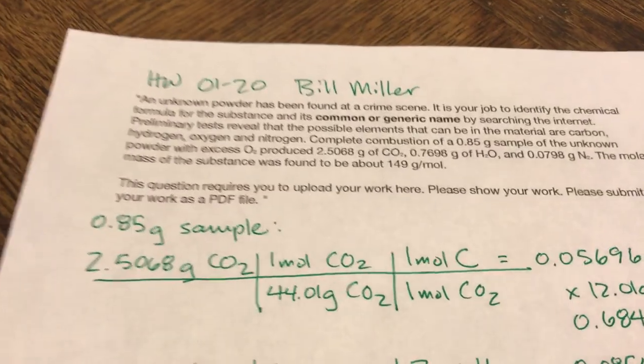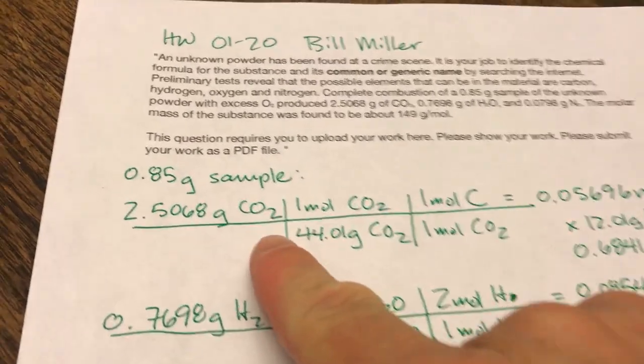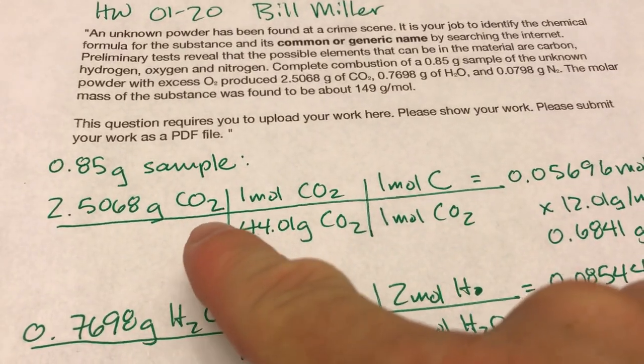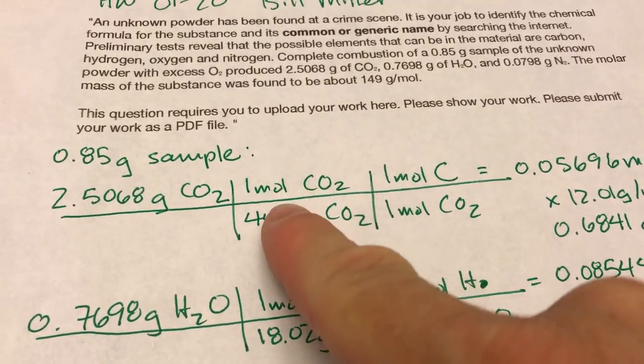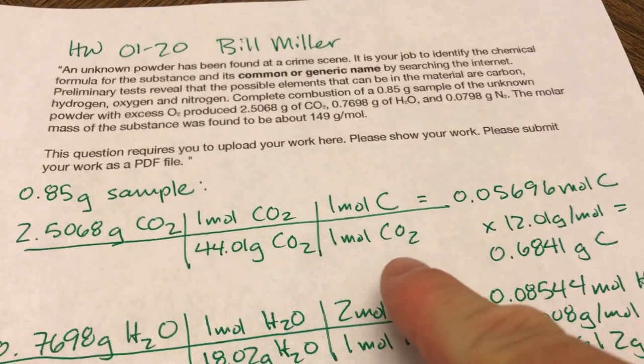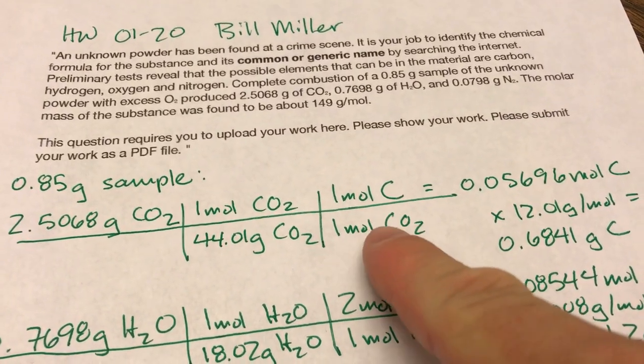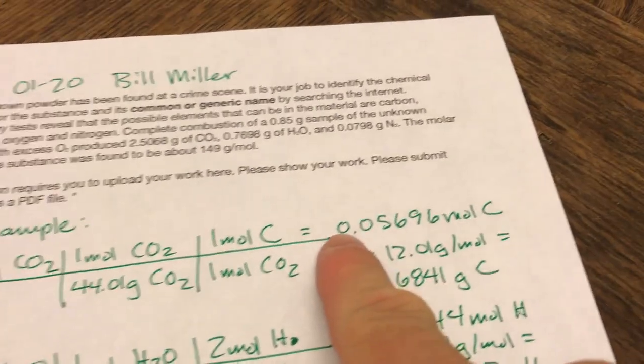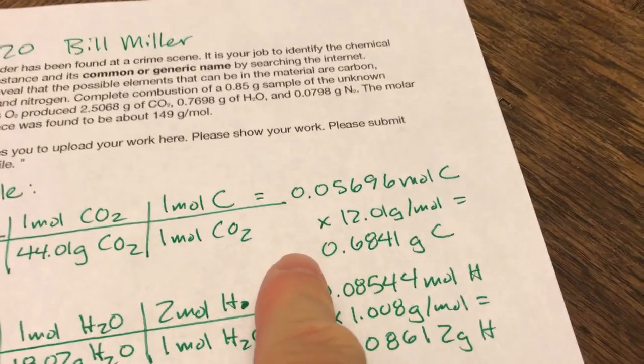We know that in combustion analysis, all of the carbon dioxide gets converted into carbon. So I set up a molar mass to get the moles of carbon dioxide. And then there's a one-to-one ratio moles of carbon dioxide to carbon. This gave me my moles of carbon, which I then turned into grams of carbon.